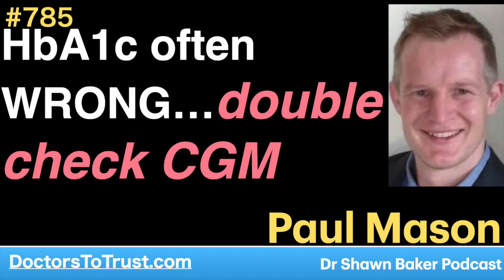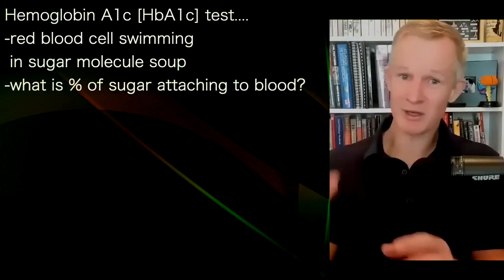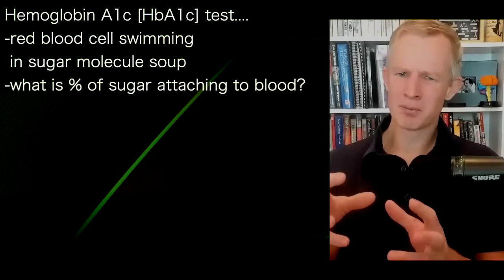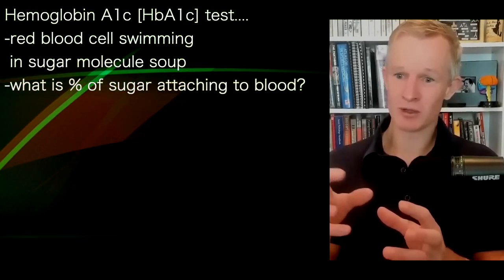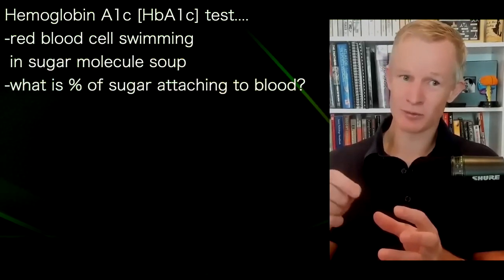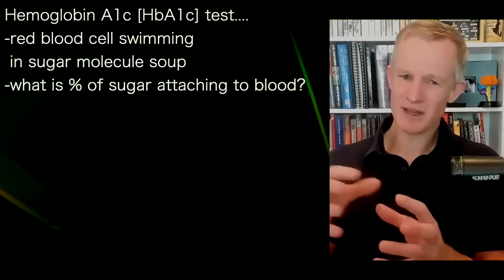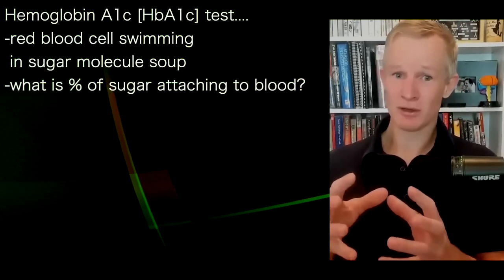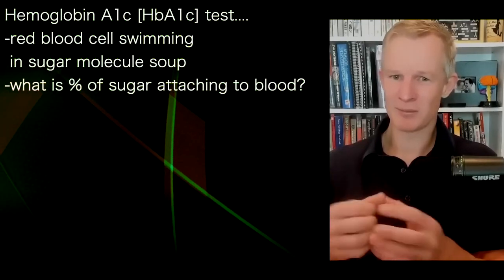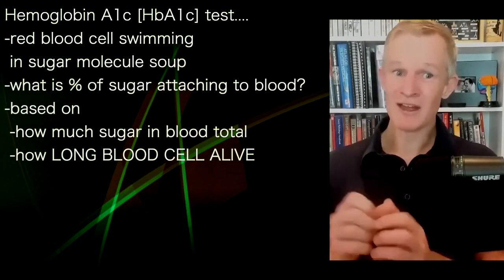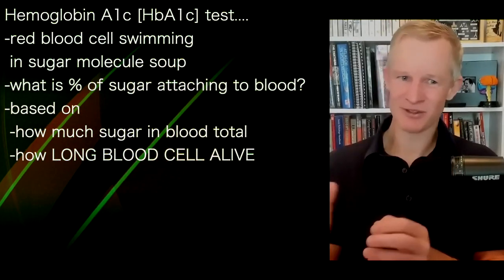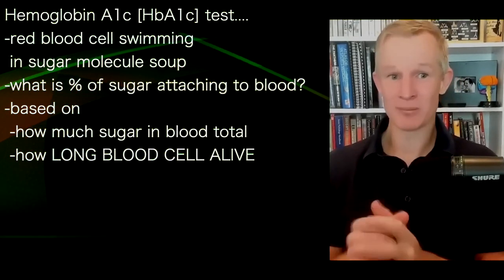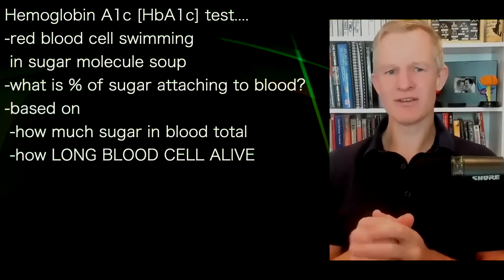The HbA1c test works by looking at red blood cells swimming in a soup of sugar molecules. Proportionally to the amount of sugar present, some sugar molecules will attach to the red blood cell. The two factors that affect how much sugar modifies the red blood cell are how much sugar you have, and how long that red blood cell sits in that pool — basically, how long the red blood cell lives for.